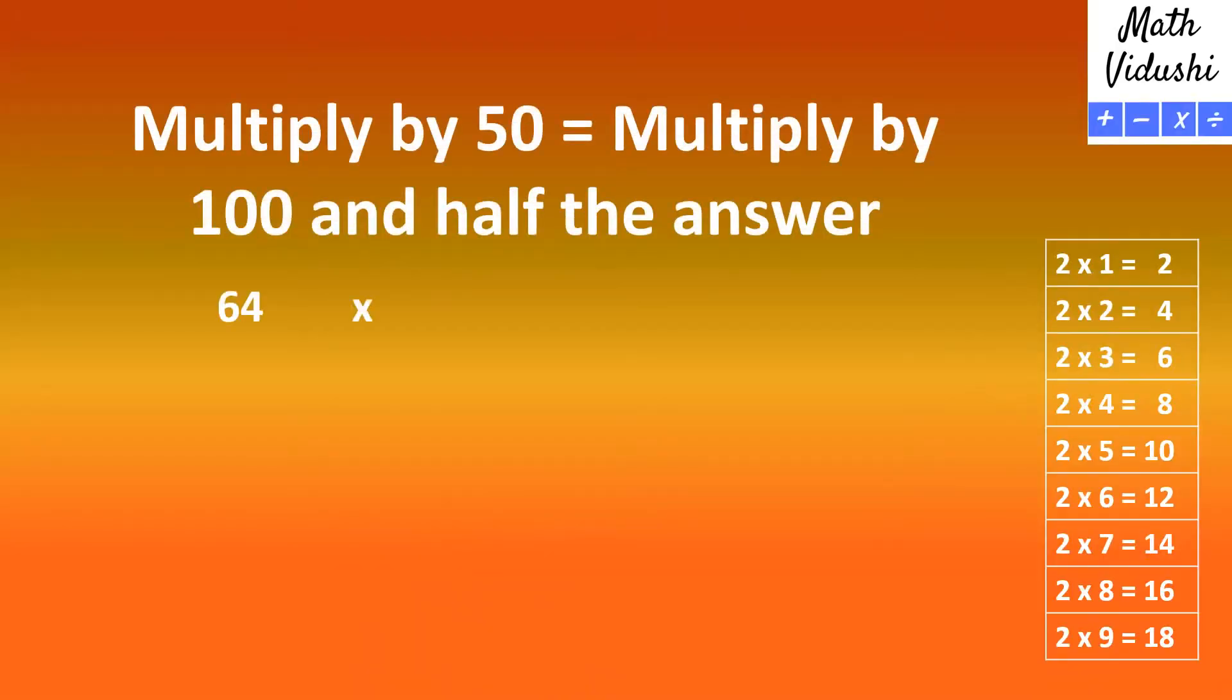We do that by recognizing that multiplication by 50 is essentially multiplying by 100 and halving the answer.